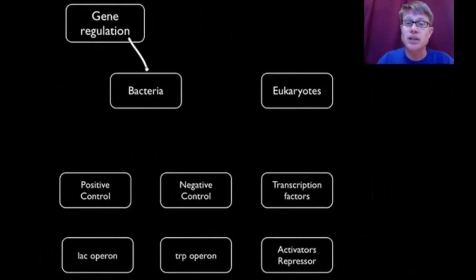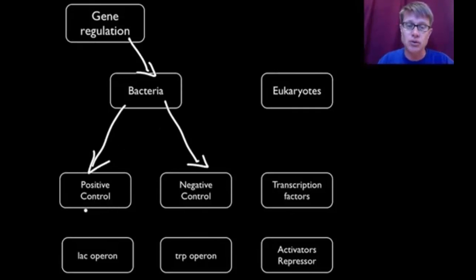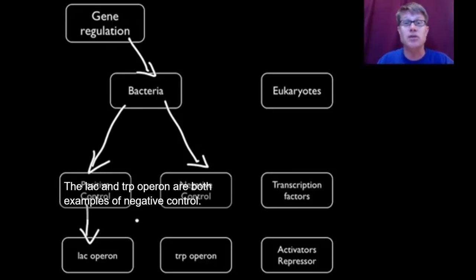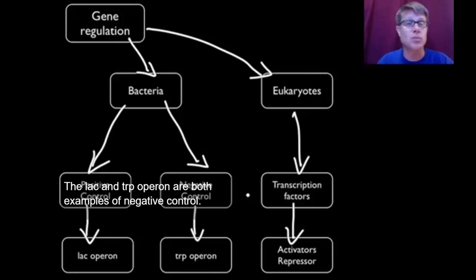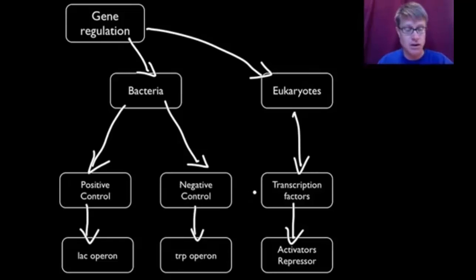As far as gene regulation examples, most of what we know now comes from bacteria. So I'll talk about positive and negative control. Positive control example I'll give you is the lac operon that deals with lactose. And the negative control is the trp operon, deals with tryptophan. And then finally I'll show you what we know about eukaryotic gene regulation and how they use transcription factors as activators, repressors to either express a gene or not.